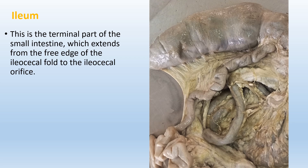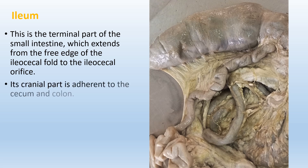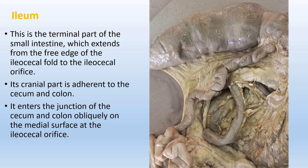The ileum is the terminal part of the small intestine and extends from the free edge of the ileocecal fold to the ileocecal orifice. Its cranial part is closely adherent to the cecum and the colon, and it enters the junction of the cecum and colon at an oblique angle on the medial surface at the ileocecal orifice. The picture on the right shows the ileum extending from the termination of the jejunum to the ileocecal orifice. The ileocecal fold connects the ileum and the cecum.